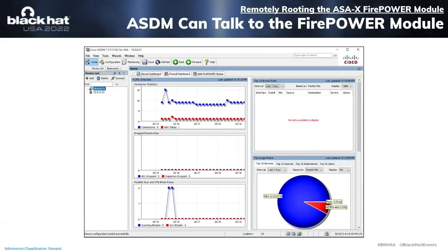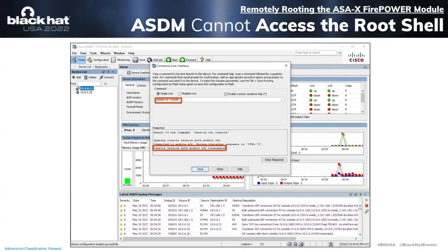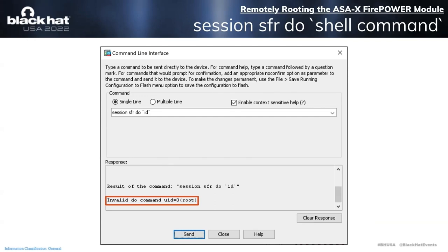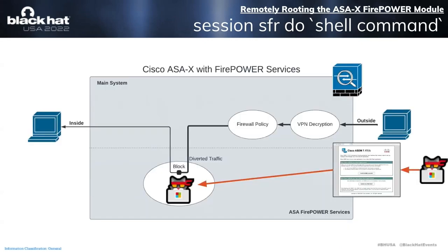I was investigating how I could land in this root shell via HTTP. It turns out ASDM can talk to the Firepower module and generate pretty graphs, but ASDM can't access the root shell directly. If I use ASDM to issue the 'session SFR console' command, the ASA basically replies that you can't do interactive shells over HTTP. So I started messing around with command injection vectors, and here's one that was successful: I issued the command 'session SFR do `id`' — where 'id' is a Linux command I wanted to execute. The ASA responded with 'invalid do command uid=0 root,' meaning we successfully executed the command as root within the virtual machine.